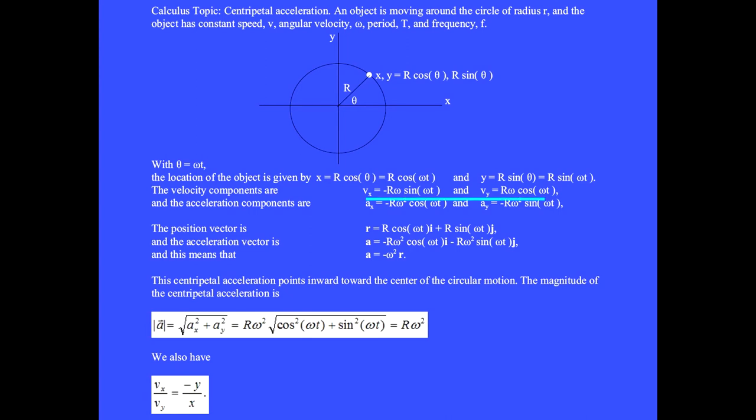The time derivative of the velocity gives the acceleration. A sub x is minus r omega squared cosine omega t because this sine turns back into a cosine and the derivative of the inside brings out another omega.